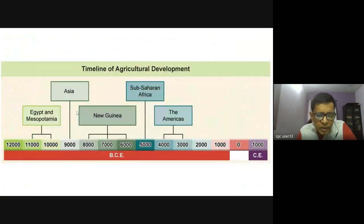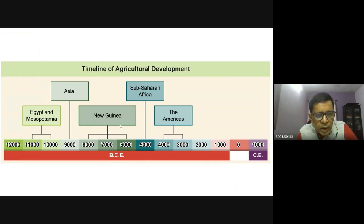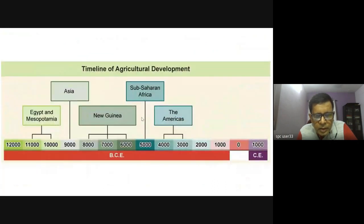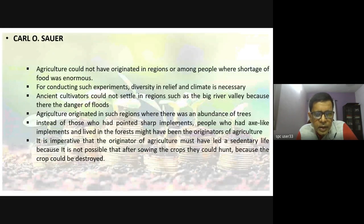Looking at the timeline of agriculture in graphical format: 11,000 to 10,000 years ago, agriculture was practiced in Egypt and Mesopotamia. By 9,000 years before present it had come down to Asia, going down to New Guinea and islands near Indonesia. It shifted to sub-Saharan Africa around 5,000 years before present, and in more recent years it is supposed to have shifted to the Americas.